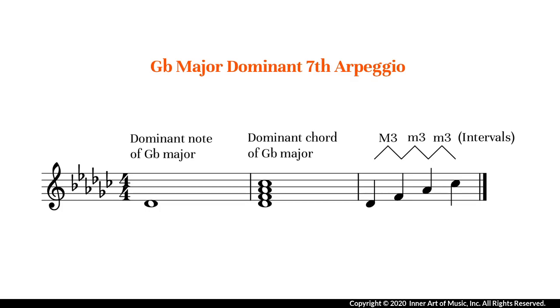A dominant seventh arpeggio is a four-note broken chord composed of a root, major third, perfect fifth, and minor seventh.